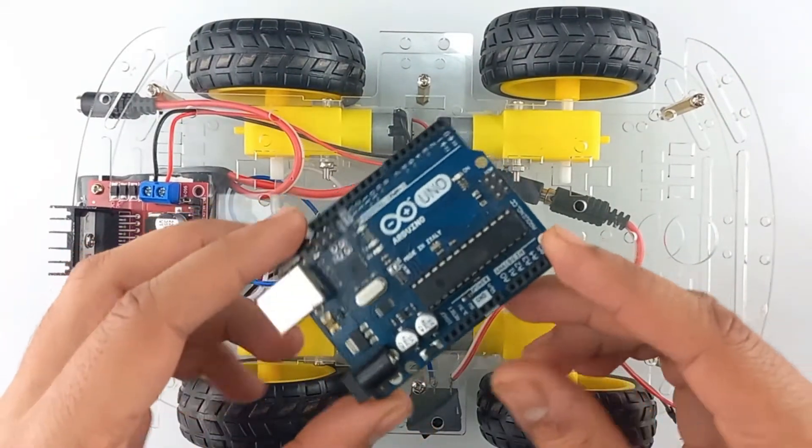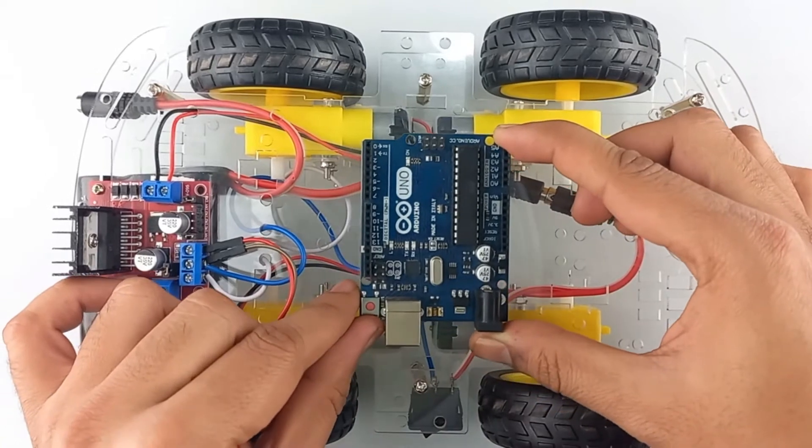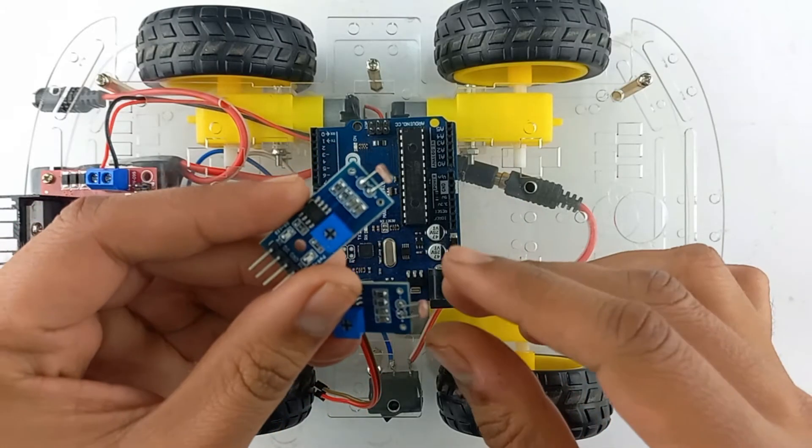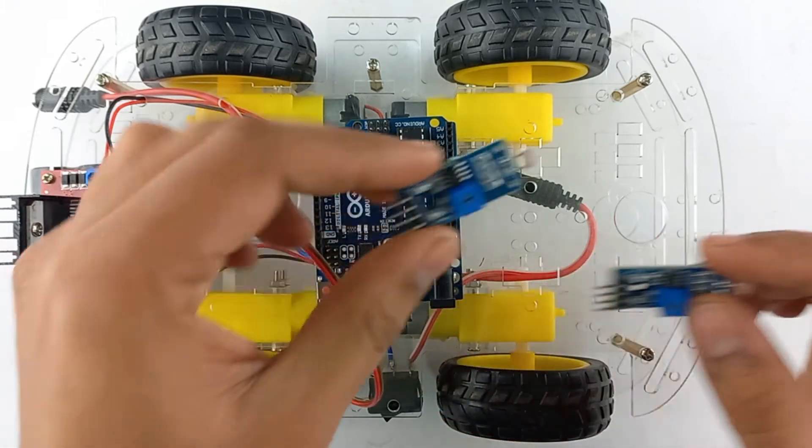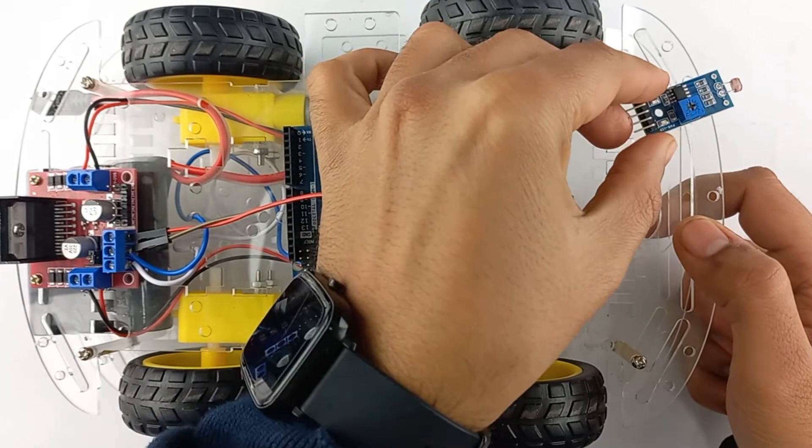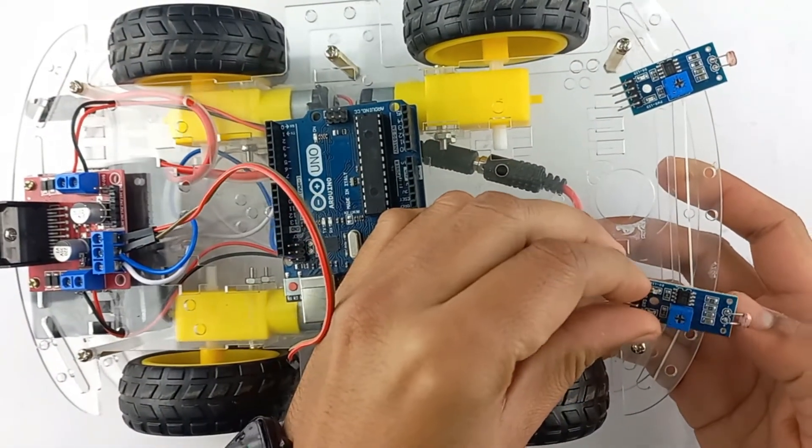Now take the Arduino Uno and place it over here. Now take the LDR sensor module, place one over here and place another over here.